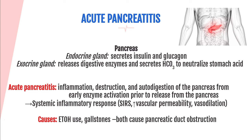Why do the enzymes get activated early and self-destruct the pancreas? Most of the time, it's due to obstruction of the pancreatic duct, which prevents digestive enzymes from flowing through. These activated enzymes get stuck and begin autodigesting the pancreas instead of flowing into the duodenum as intended. The two main causes of pancreatic duct obstruction are ETOH (alcohol) use and gallstones. Other causes include abdominal surgeries, drugs, trauma, or infection.